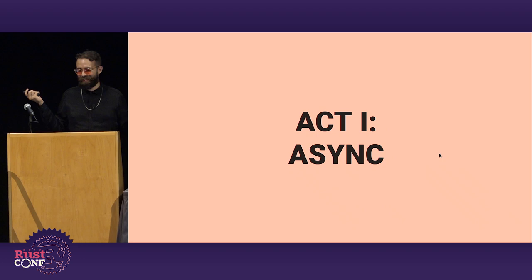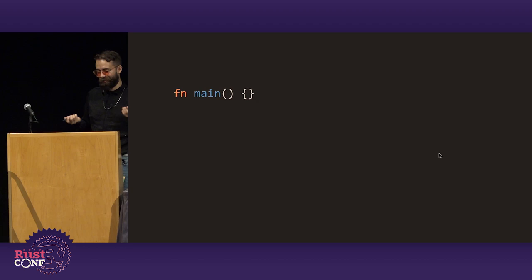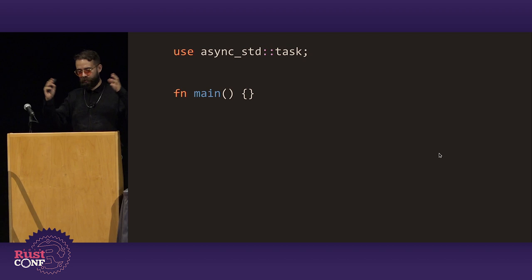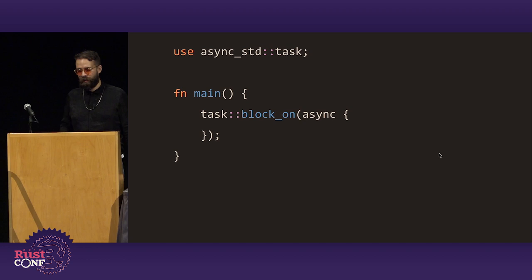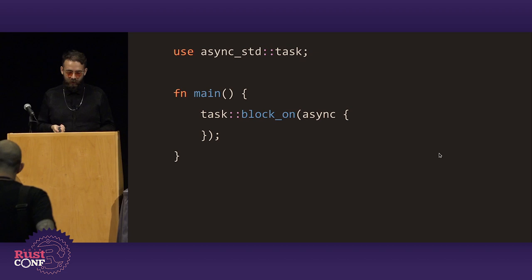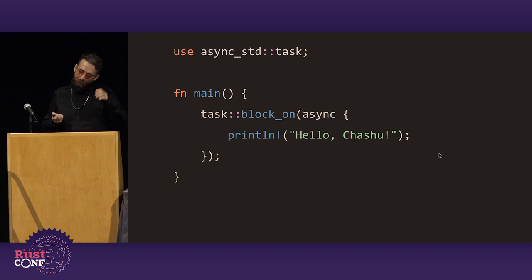Act one: async. How do you do async function main today? Well, you don't directly — you define a function main, get a little executor. In this case we're using async-std, and we say block_on. Inside of it, we put an async closure. Something needs to be running the async code — all the futures and stuff — and at the top level that's block_on. It runs all that async code until it's done, and blocks until it's done. Inside of it, we're going to say hello Chashu.